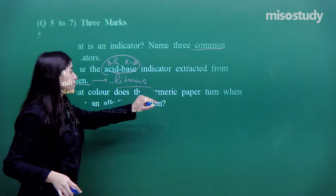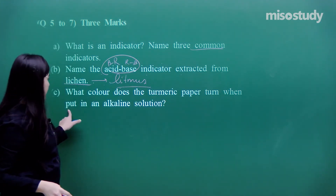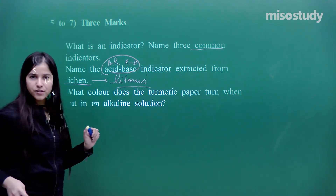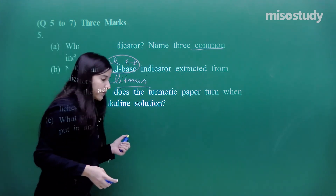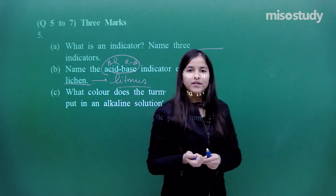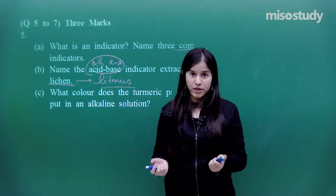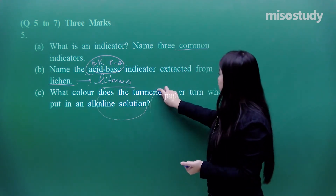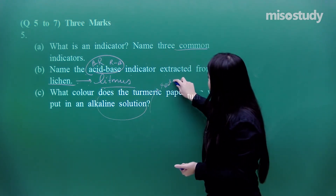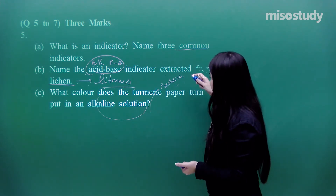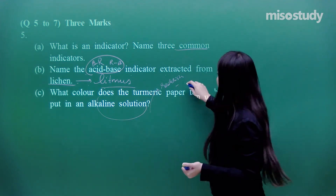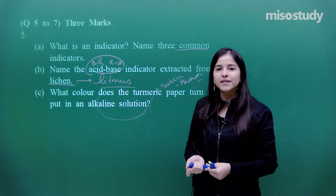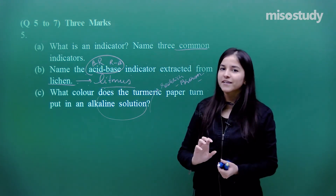What colour does turmeric paper turn when put in an alkaline solution? You must have seen turmeric stains on shirts — whenever you try to wash it with detergent, which is a base, the alkaline solution turns the turmeric stain reddish brown. So turmeric paper turns reddish brown in an alkaline solution. That is how a natural indicator acts.